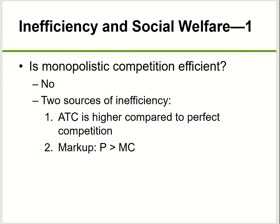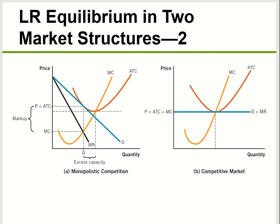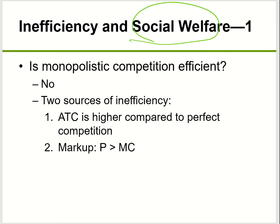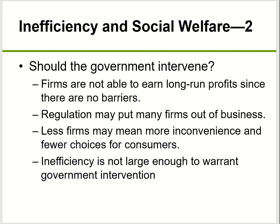Looking at social welfare for monopolistic competition — it is less efficient compared to perfect competition. The social welfare analysis is similar to monopoly. You can see there is a deadweight loss — a little triangle here — coming from companies in monopolistic competition, showing inefficiency in the market. This inefficiency comes from two sources: first, average total cost is higher because price is more than the minimum average total cost; and second, companies have a markup, meaning price is more than marginal cost.